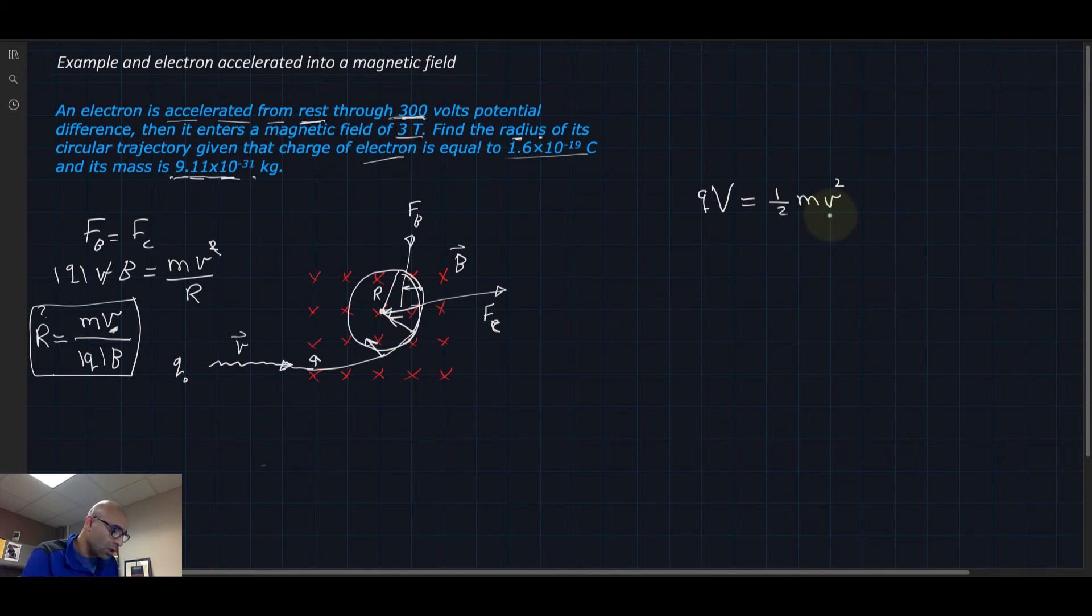This is v for the velocity—it's small, lower case. Q is the charge of the electron, which is 1.6 times 10^-19, and the voltage difference is 300. That should equal one half times the mass of the electron, 9.11 times 10^-31 kg, times velocity squared.